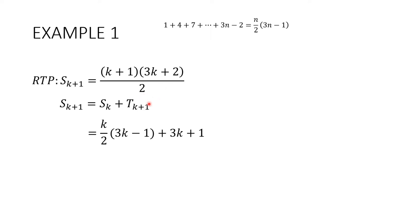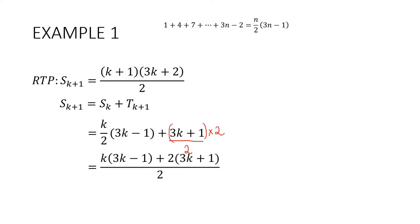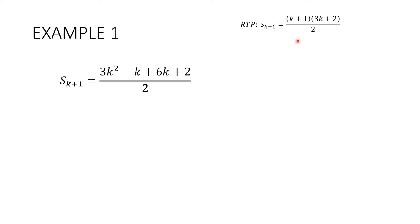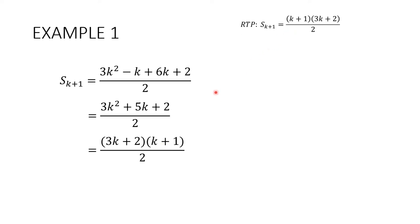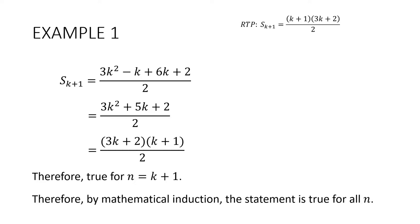I can see a common denominator of 2. This part has a 2 on the denominator but this term doesn't, so I'll put 2 on the bottom and multiply that term by 2 over 2 — which is multiplying by 1, so I haven't changed anything. Expanding through the numerator, I get 3k squared minus k plus 6k plus 2, all over 2. Tidying up the middle terms and factorizing, they match the required result. So I have proven it. The statement is true for n equals k plus 1. Therefore, by mathematical induction, the statement must be true for all n.